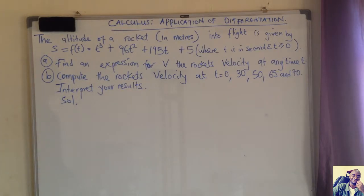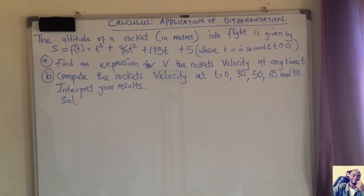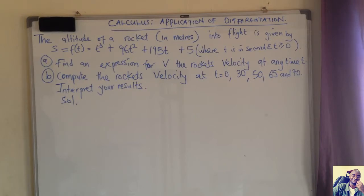Welcome. In this video, we want to see how we can apply differentiation to solve the equation we are given. The altitude of a rocket in meters in two flights is given by S, a function of t, equal to t to the power 3 plus 96t squared plus 195t plus 5, where t is in seconds and t is greater or equal to 0. The first part is to find the expression for v, the rocket's velocity at any time t.